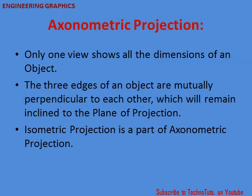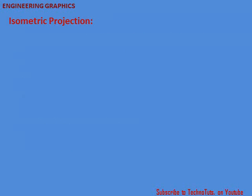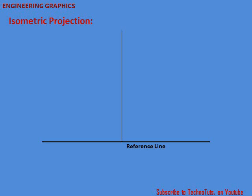In axonometric projection, only one view shows all the dimensions of the object — by viewing only one side you get all the dimensions of the other sides as well. The three edges of the object are mutually perpendicular to each other, which remain inclined to the plane of projection. Isometric projection is a part of axonometric projection. To draw the isometric position, you require a reference line and a vertical line. Where the vertical line and reference line meet, an inclined line of 30 degrees is drawn at the right-hand side and also at the left-hand side.